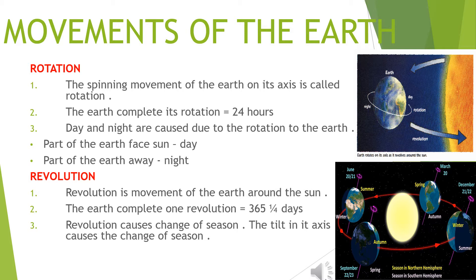The part of the Earth facing the sun experiences day, and the part away from the sun experiences night. Revolution is the movement of the Earth around the sun. One revolution is completed in 365 and one-fourth days. Revolution causes the change of seasons, and the tilt of the Earth's axis also causes the change of seasons.